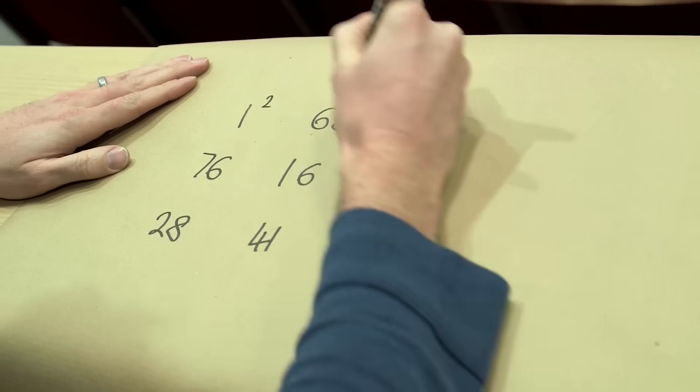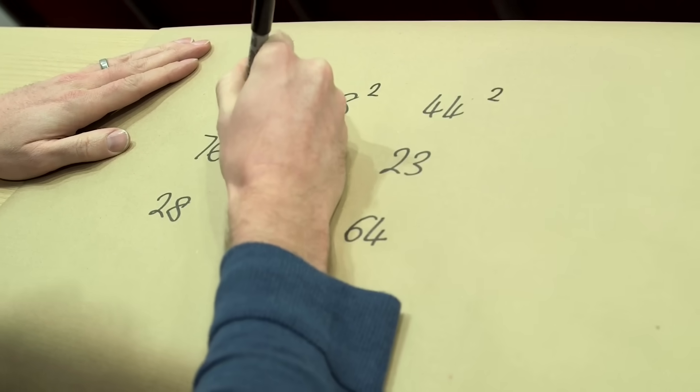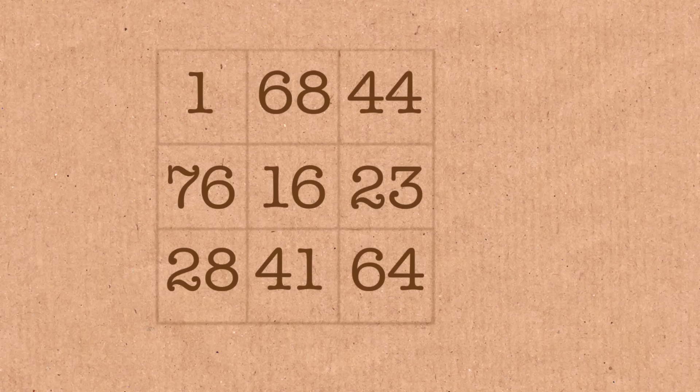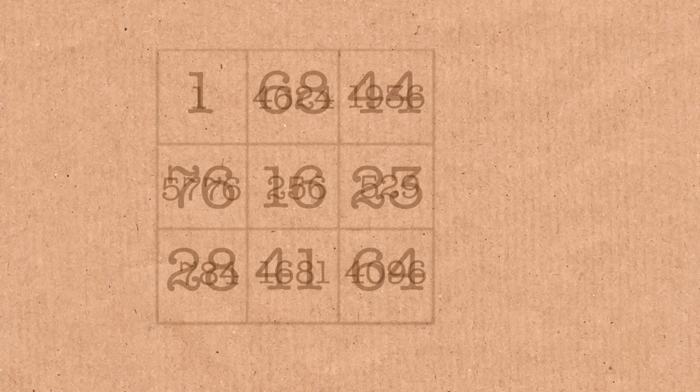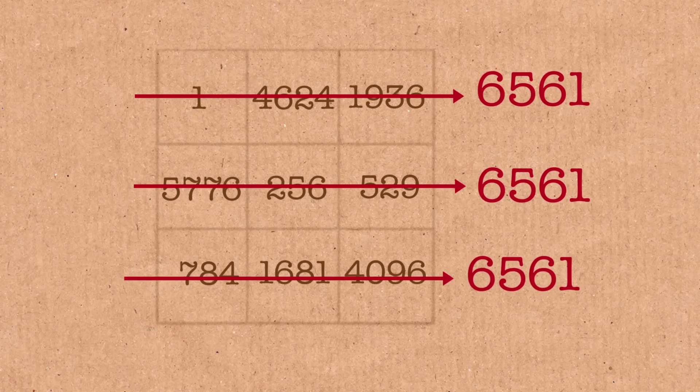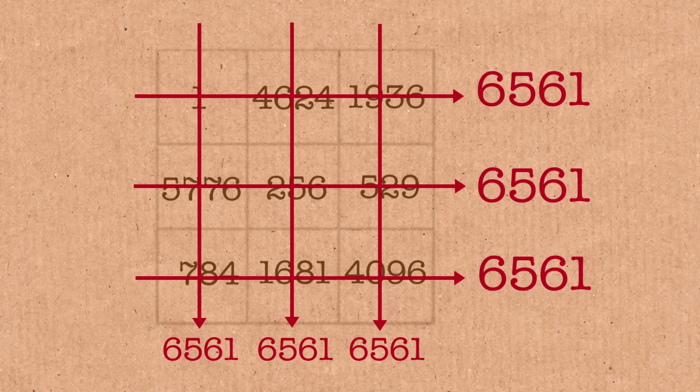If I go through now and square all of these numbers, that becomes a magic square, or rather it becomes a semi-magic square. So this is so close to being a magic square of square numbers.